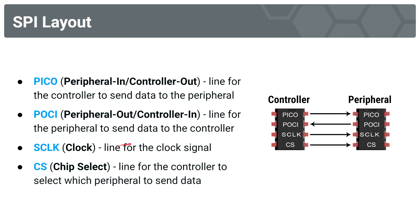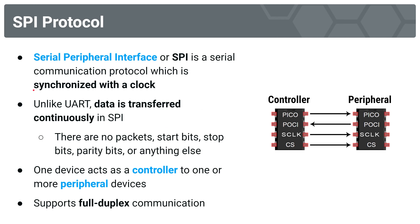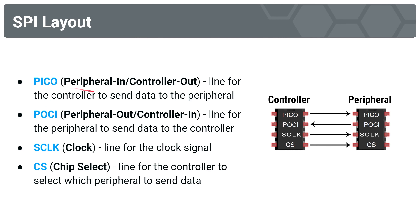Our third line is the CLOCK line — the shared clock signal. This is what it means for a protocol to be synchronized, unlike UART. The controller outputs a clock signal by which both the controller and the peripheral time their data. Our fourth line is the CS or Chip Select line. This allows the controller to select which peripheral it would like to send data to, since there can be multiple peripherals connected to one controller.